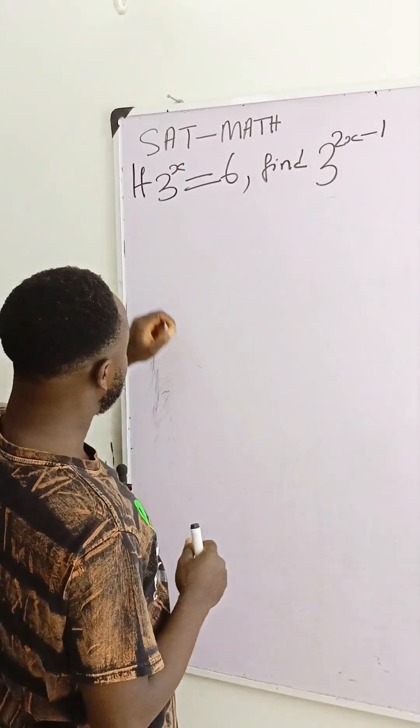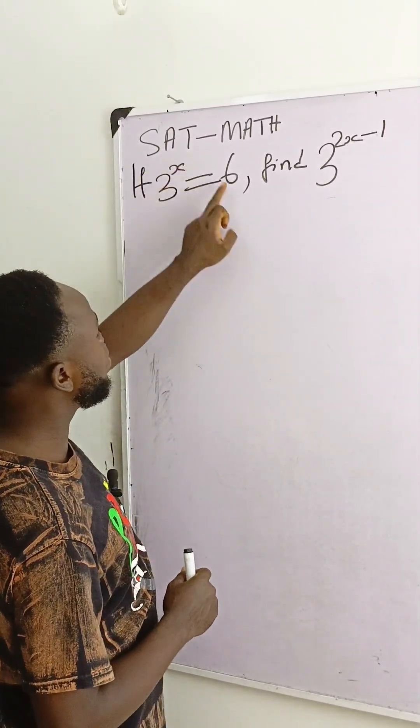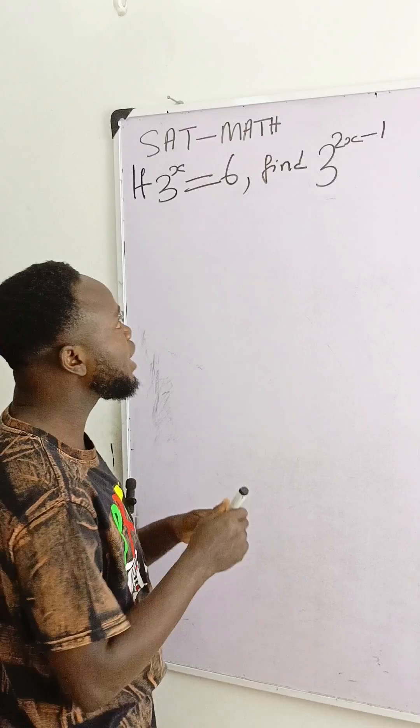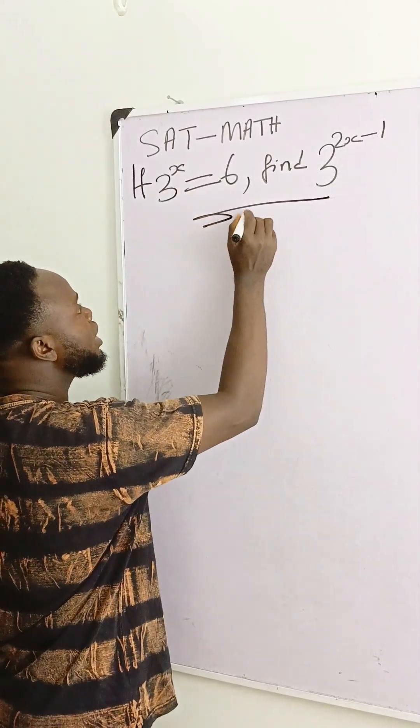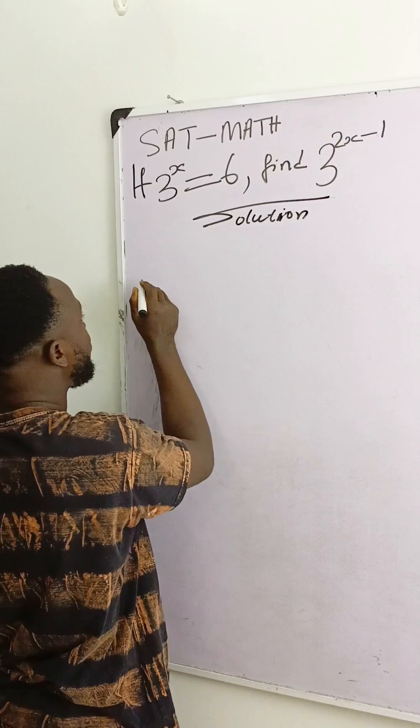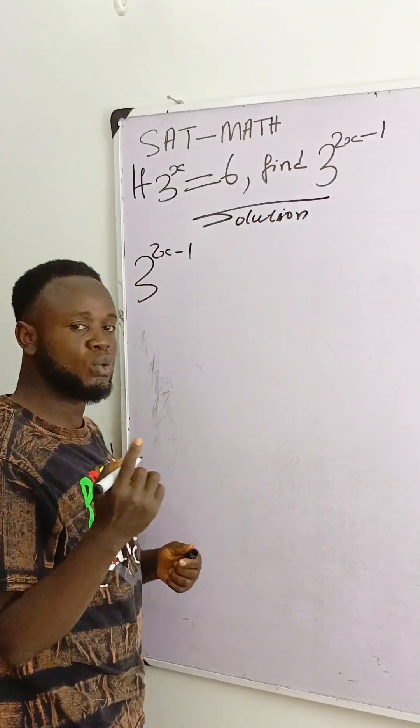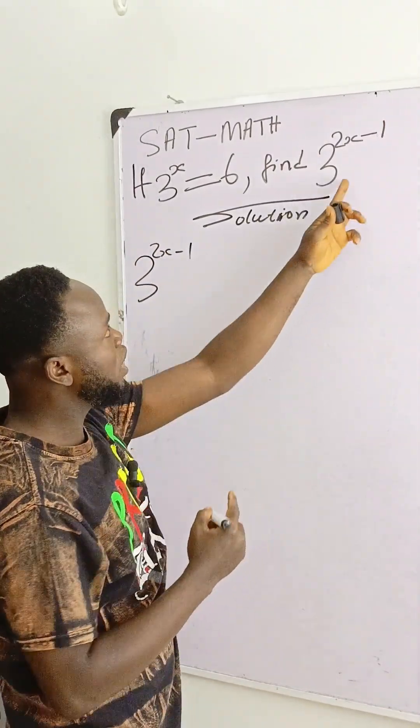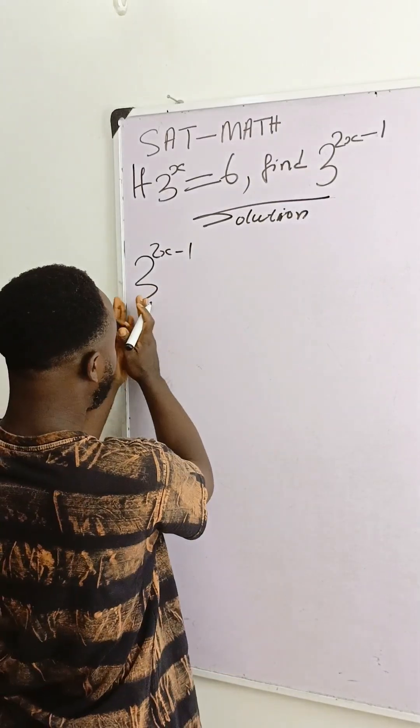The question we have here is: If 3 exponent x equals 6, we are required to find 3 exponent 2x minus 1. That's what we are required to find.